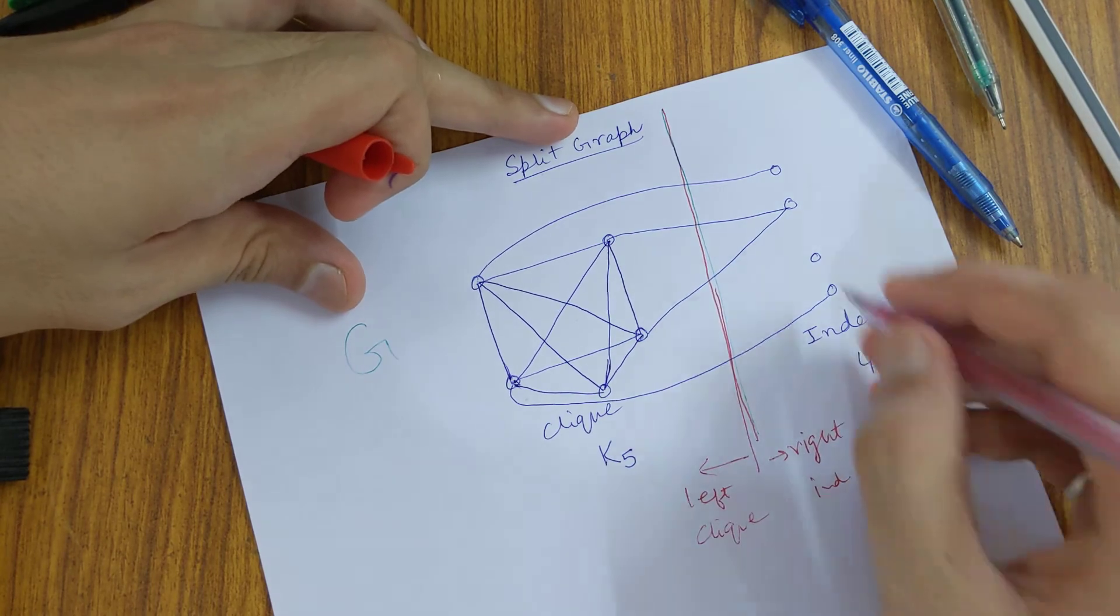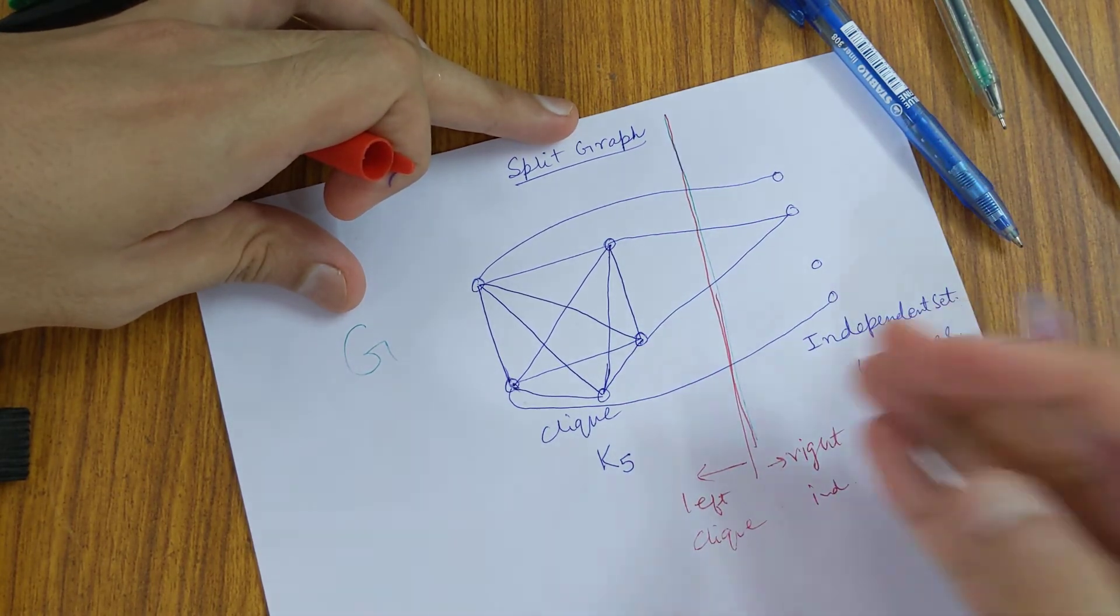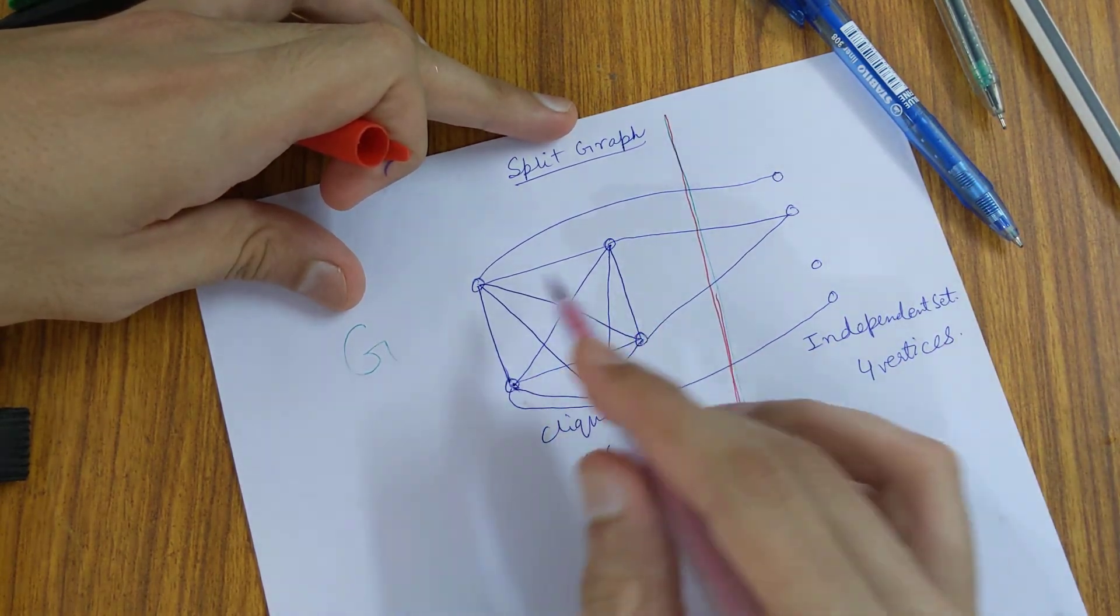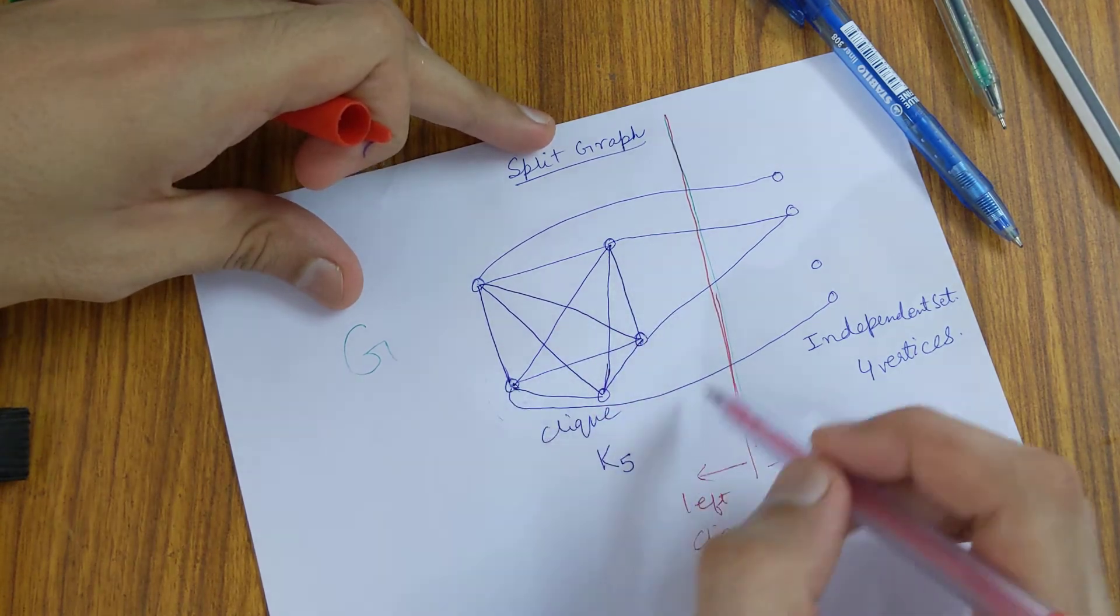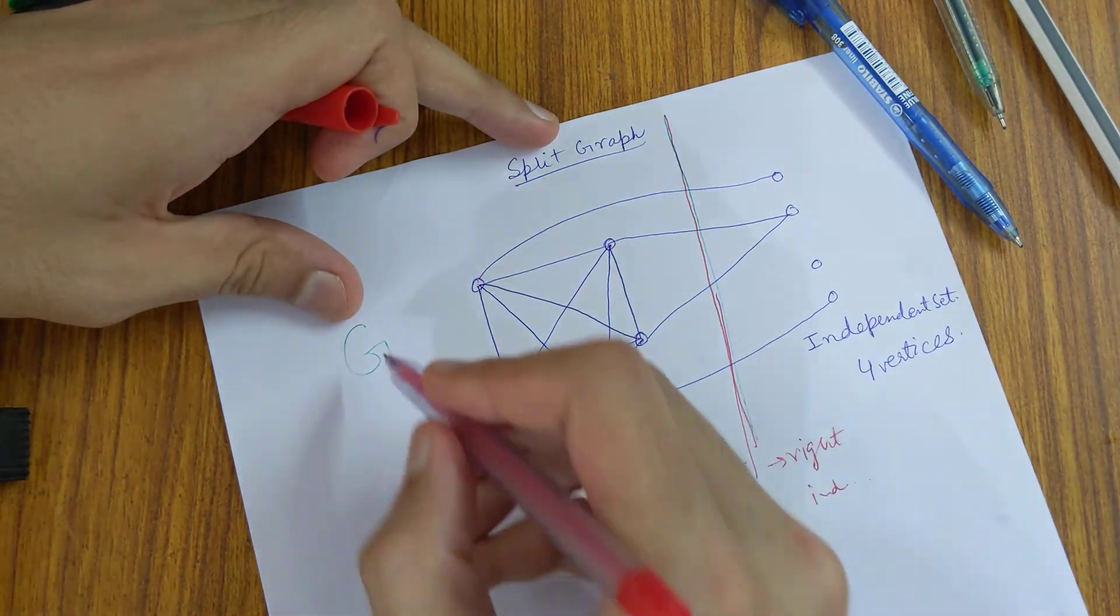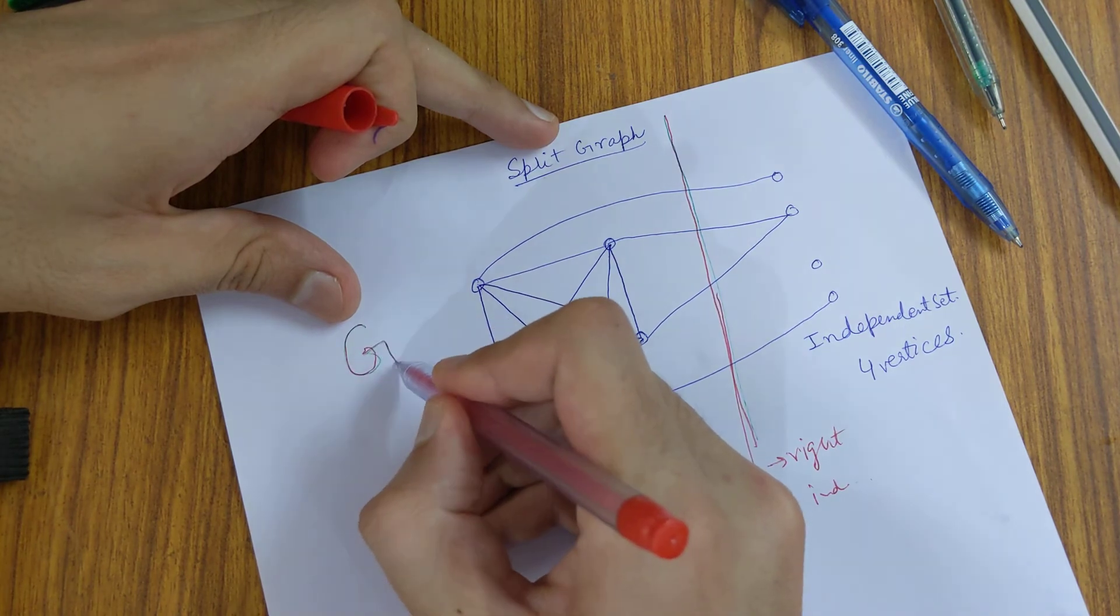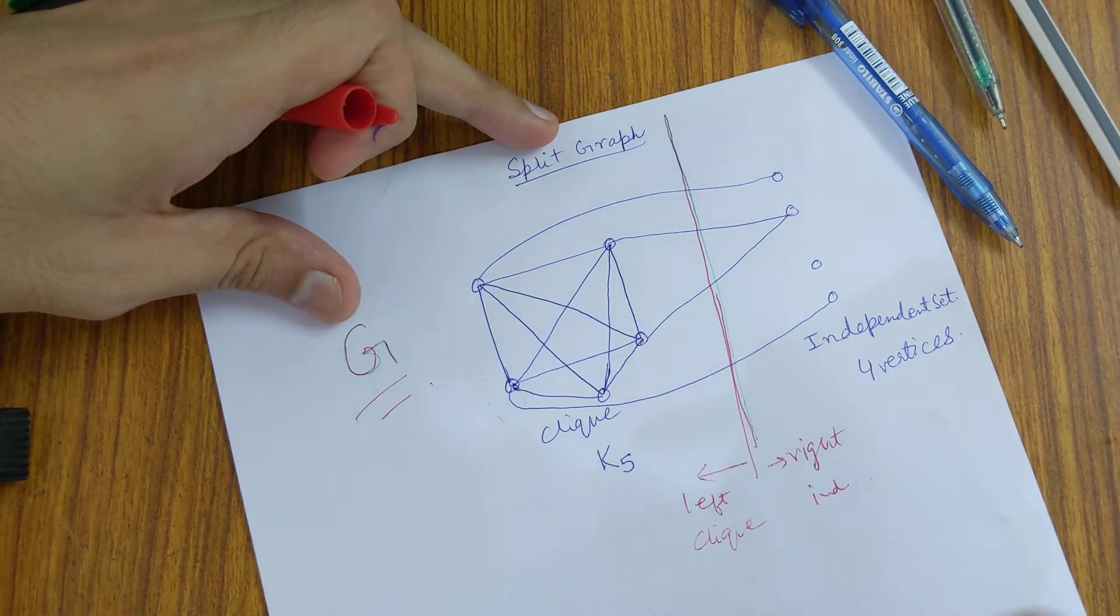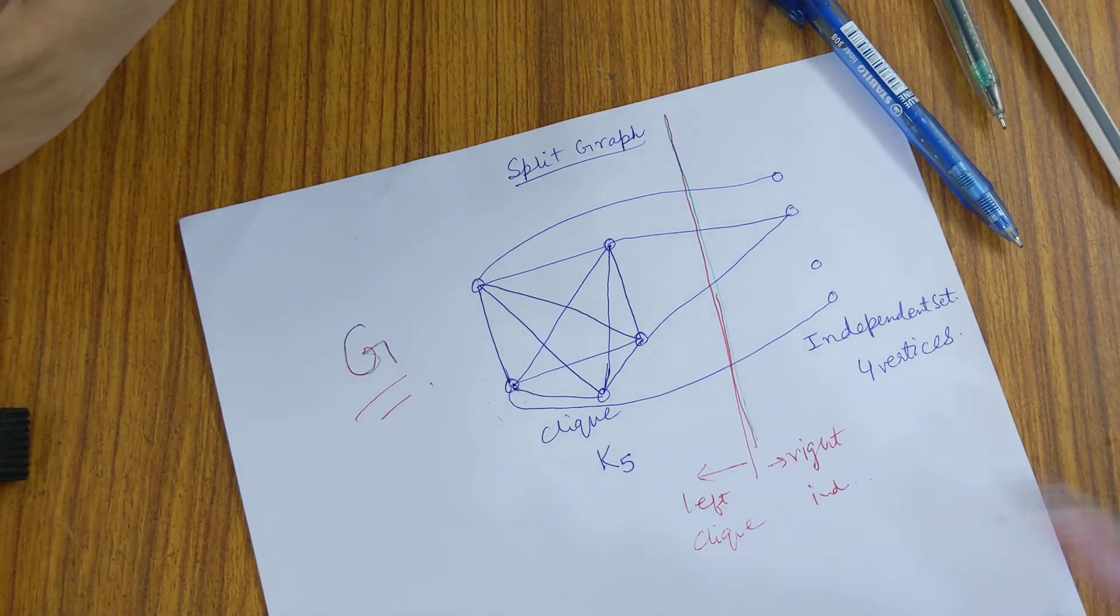They form an independent set because none of them are adjacent, and these five vertices form a clique because all of them are adjacent to each other. So this graph G is an example of a split graph.